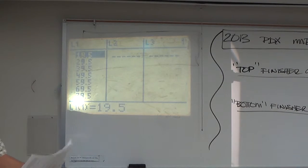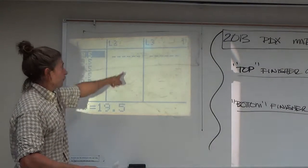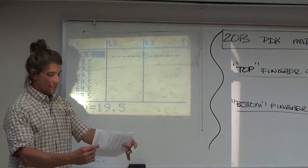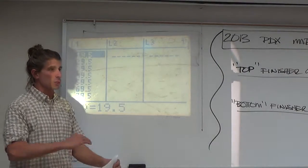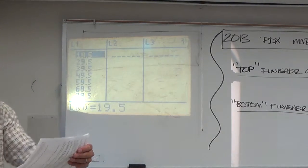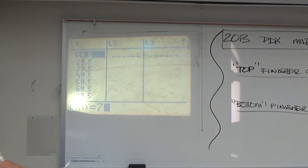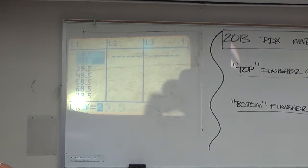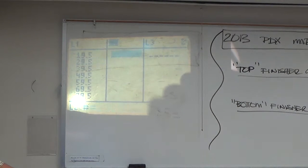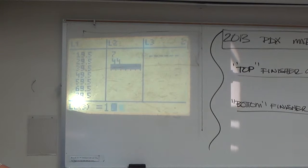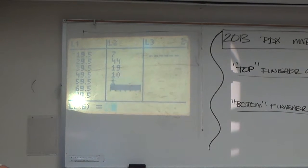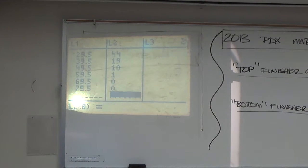Now, I vote that in L2 we put the frequencies of the top finishers. We'll just go in order. So, frequencies of the top finishers: 7, 44, 19, 10, 1, 0, 0.